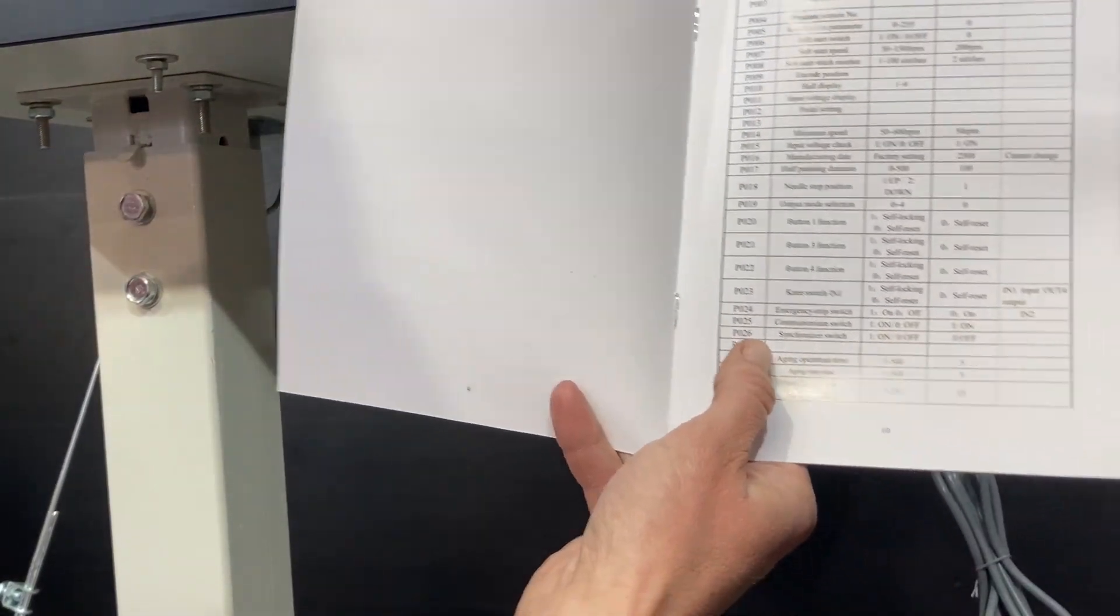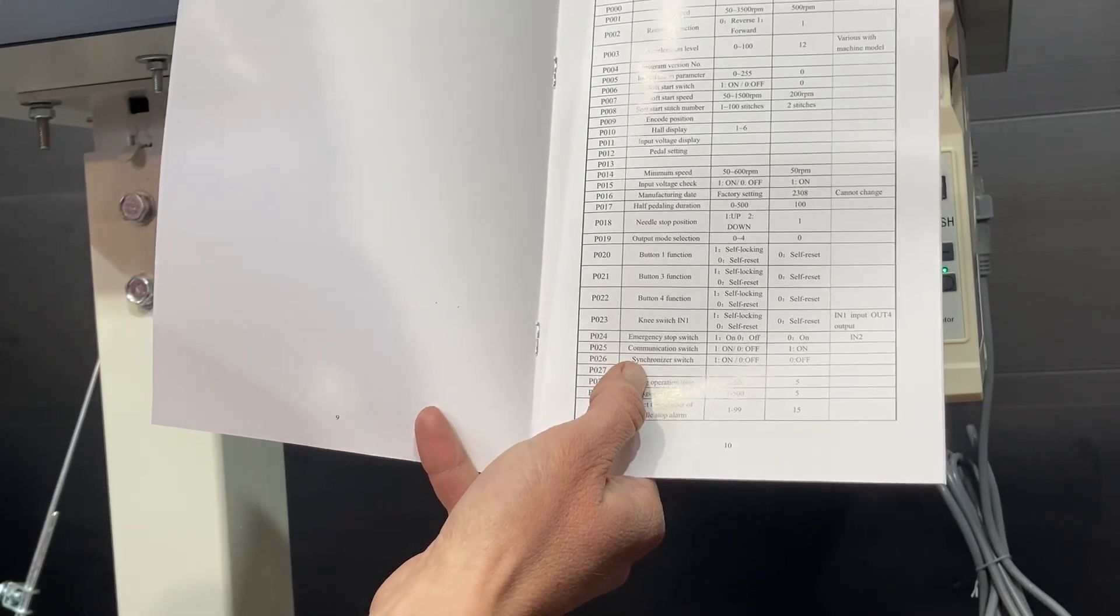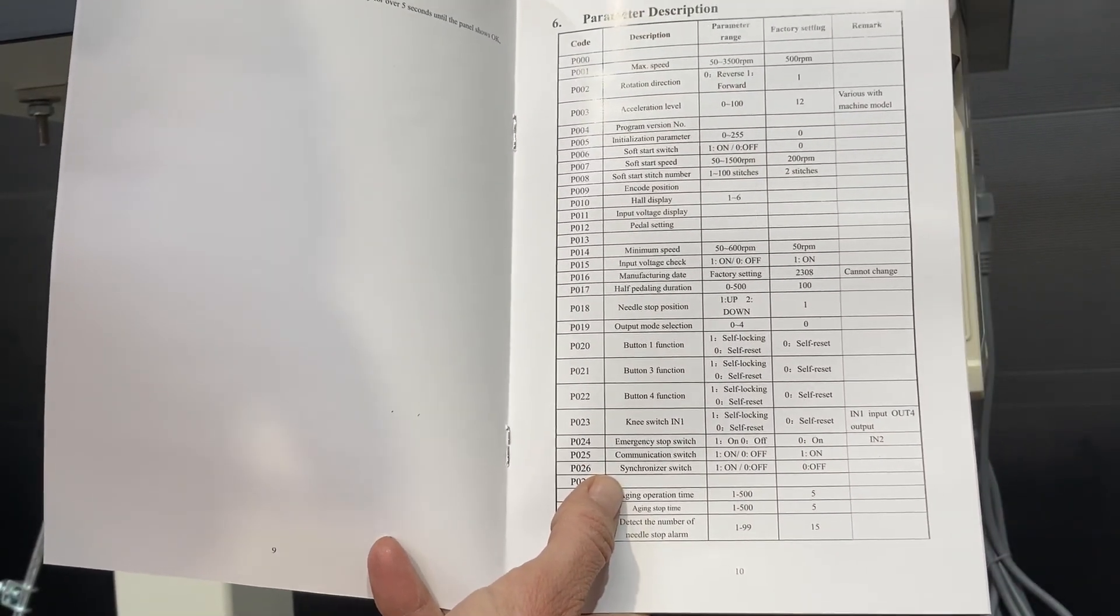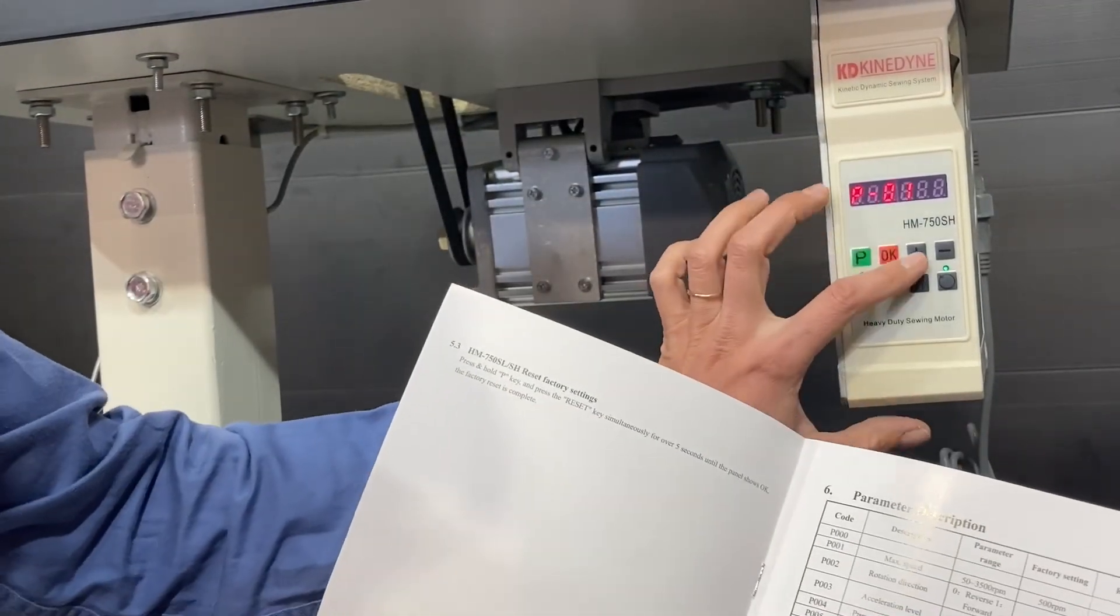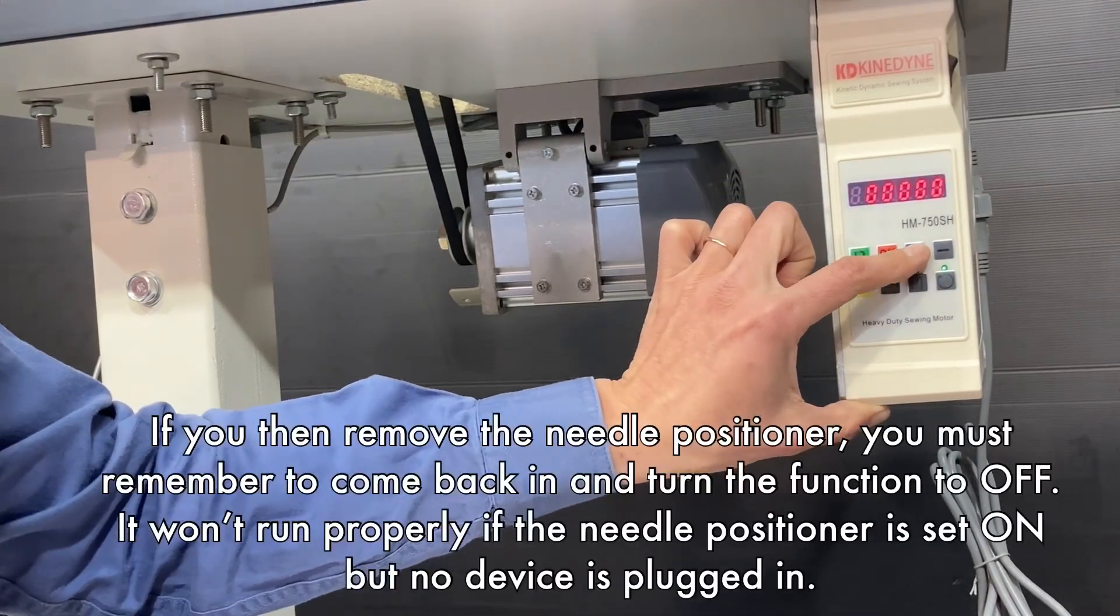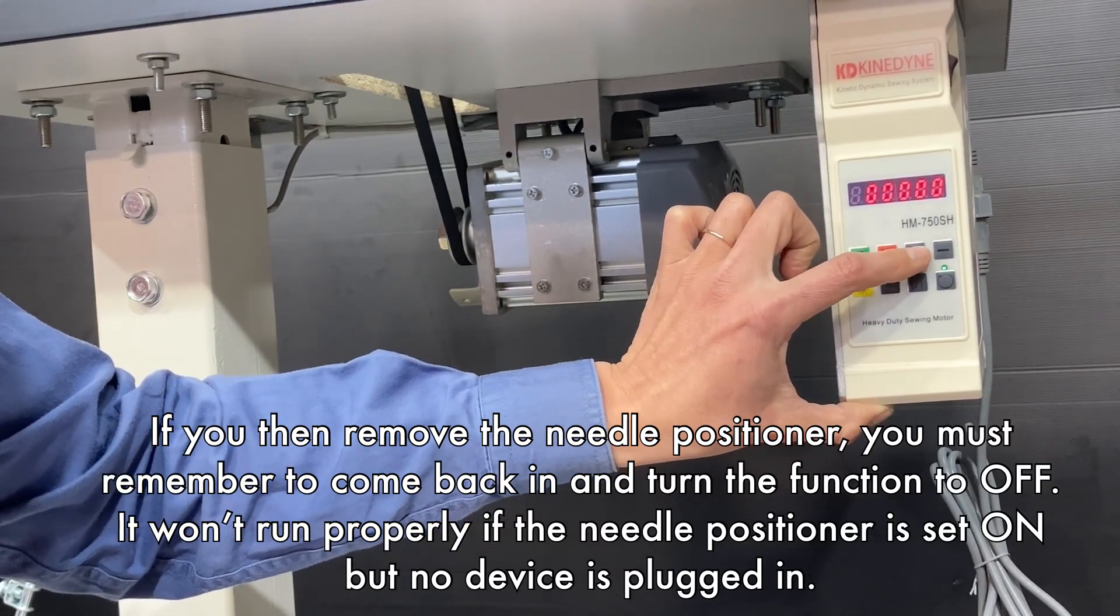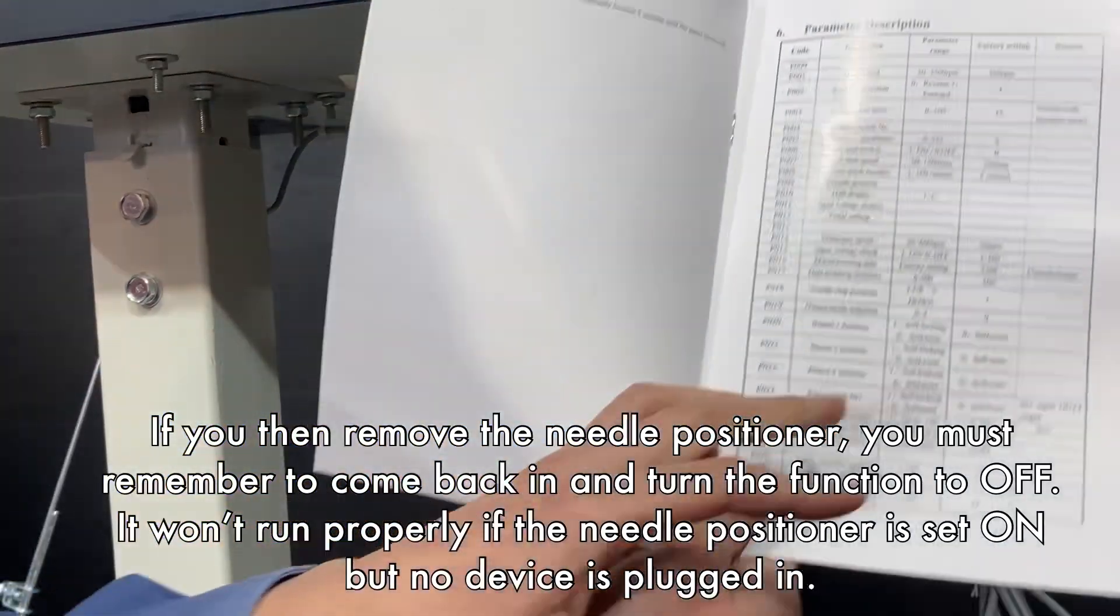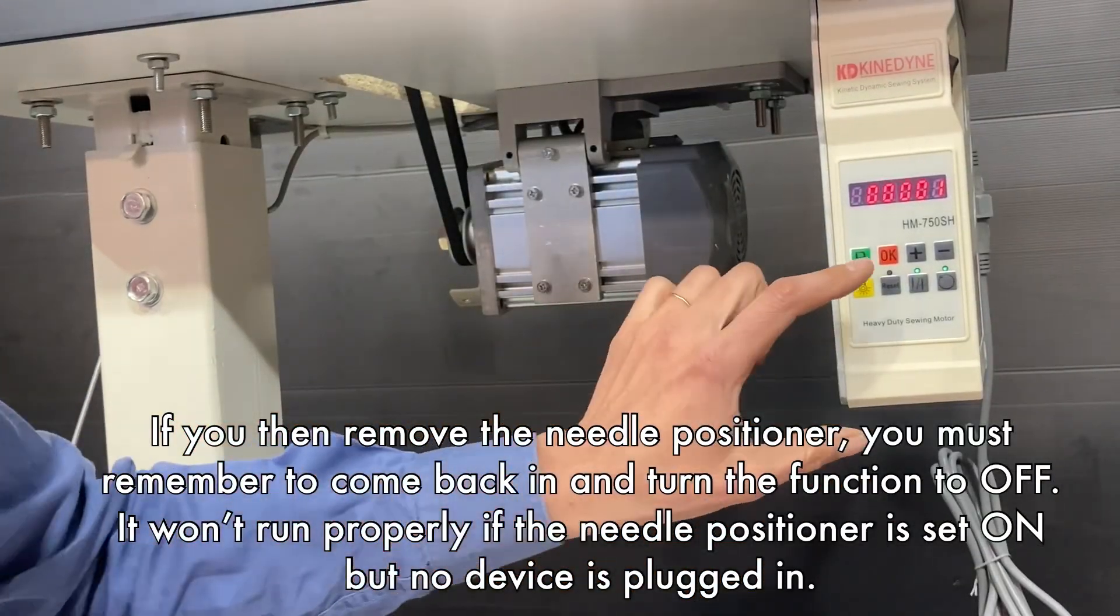We have here P26, the synchronizer switch. So that's for the needle positioning system. So if you do put a needle positioning system on, you'll need to turn it on. So we go to 26, P to edit, plus, you have to be a bit patient. Plus to make it 1, which it says here in the list that 1 is on, 0 is off. Then we go OK.